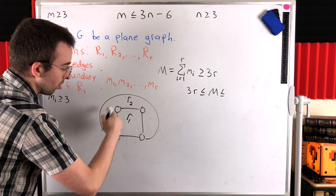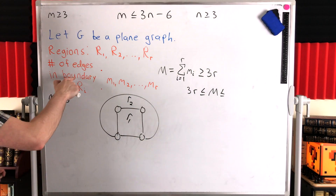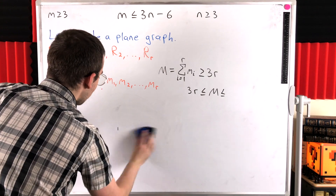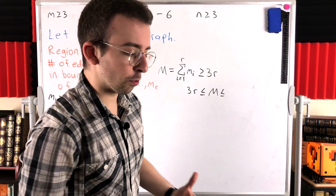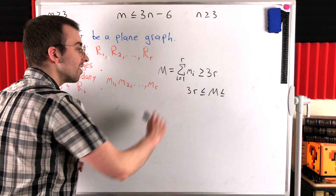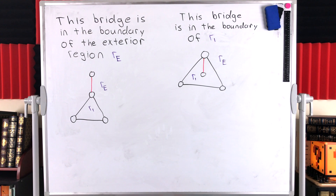On the other hand, if an edge isn't on a cycle — and is thus a bridge — it's only in the boundary of one region, so it's counted just once in the sum. Quick correction: a bridge doesn't have to be in the boundary of the exterior region; it could be contained within some other region. Either way, it will be in the boundary of exactly one region.